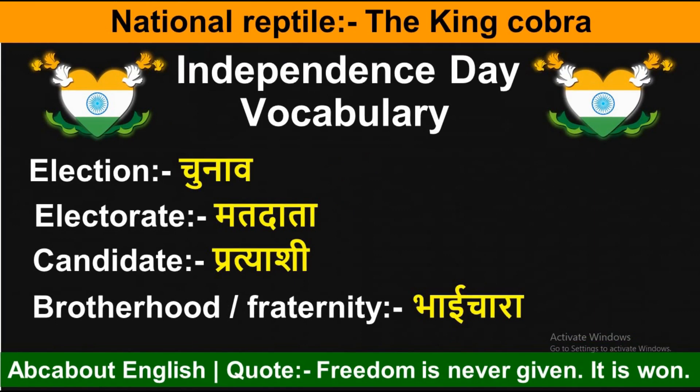Next word hai 'election' — election ka matlab hota hai chunav, jo ki har democratic desh ki pahchan hote hain. 'Electorate' ka matlab hota hai matdata — jo vote daalta hai. 'Candidate' yaani pratyashi — jo leaders aur politicians hote hain wo hamare candidates hote hain. 'Brotherhood' ya 'fraternity' — fraternity ka matlab hota hai bhaichara. Hamara desh bhaichare ko bahut zyada promote karta hai.